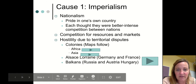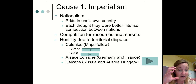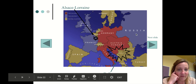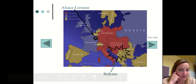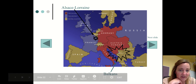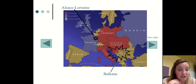The Balkans area was being fought over in terms of who has more influence — Austria-Hungary or Russia. Russia was on the side of Serbia. Right in this area is where Sarajevo is, and this is where the assassination of Archduke Franz Ferdinand is going to take place.